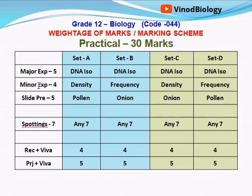So only in the minor experiment and slide preparation can they interchange. For spottings, we have 11 and any seven can be selected. This is the method of the marking scheme and set allocation.